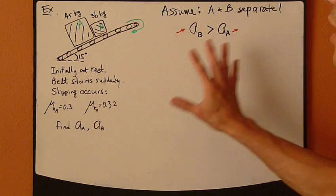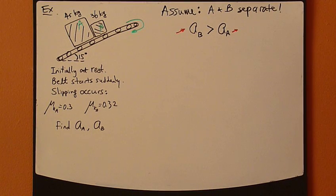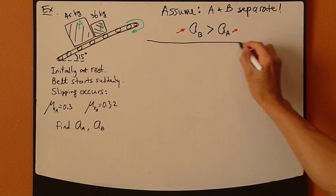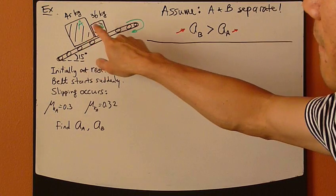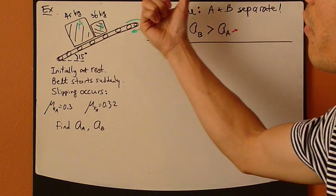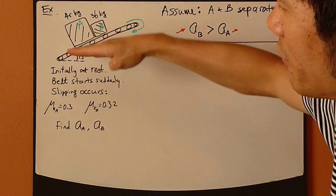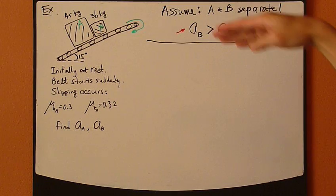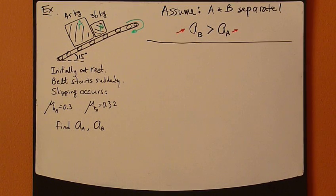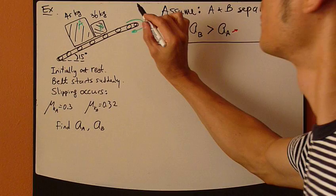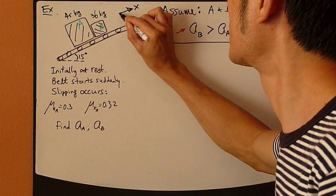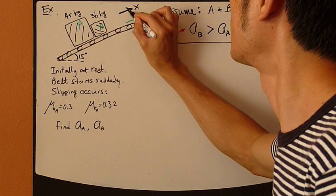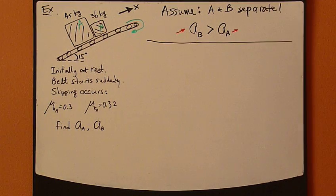Alright, so let's follow the procedures. Step 1, choose a coordinate system. Now, in this case, my box A and B, they both move in this direction, 15 degrees from the horizontal. So maybe it's more convenient for me to define my x direction as 15 degrees also from the horizontal. So that's my x.